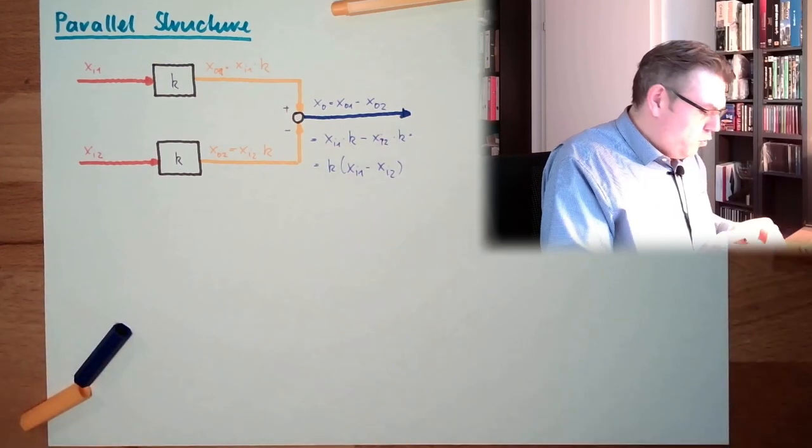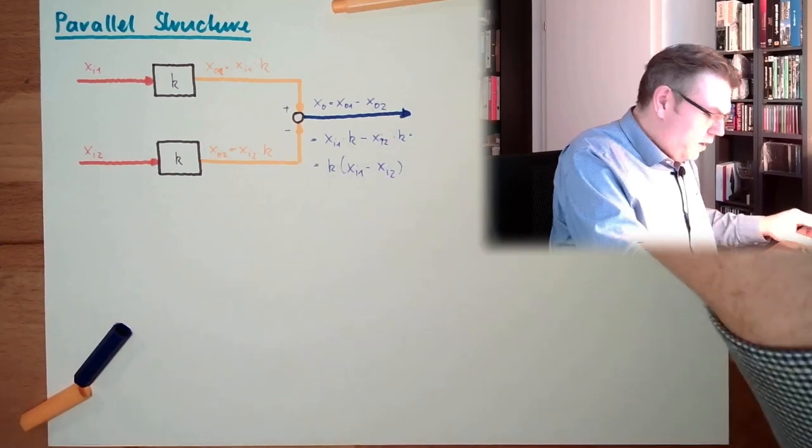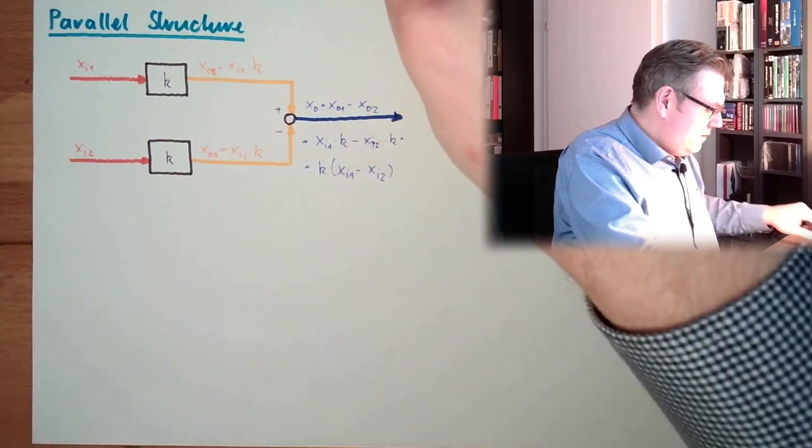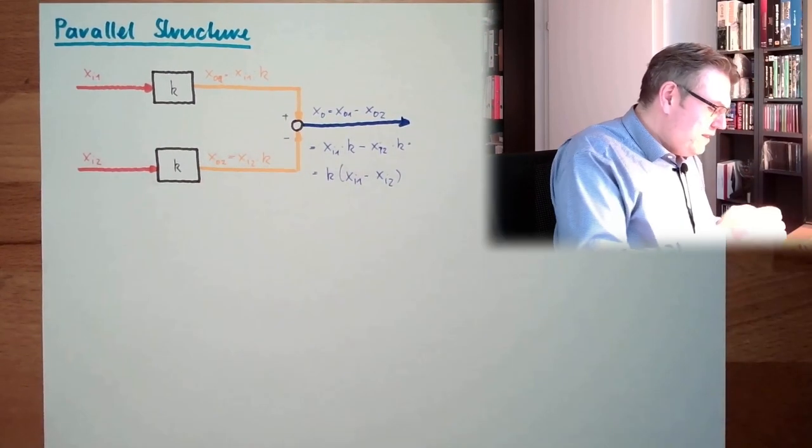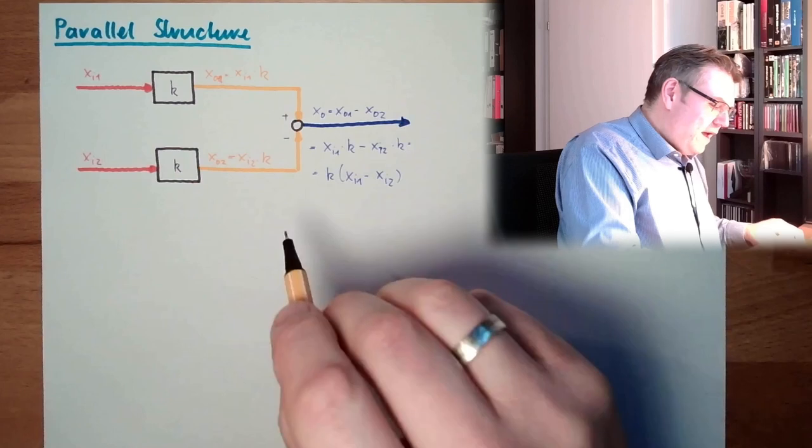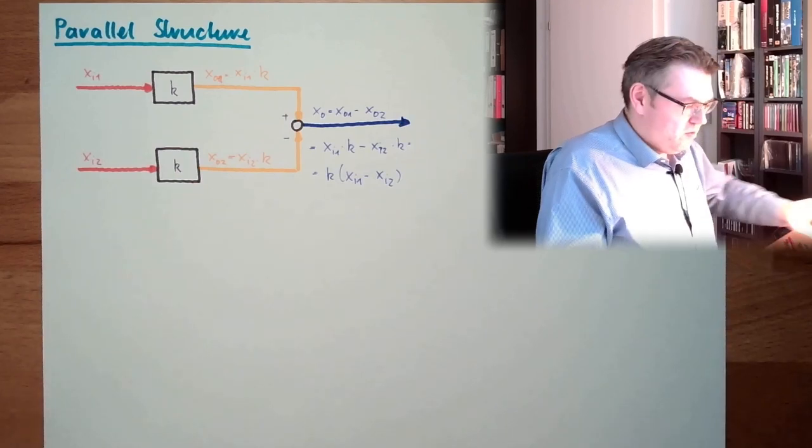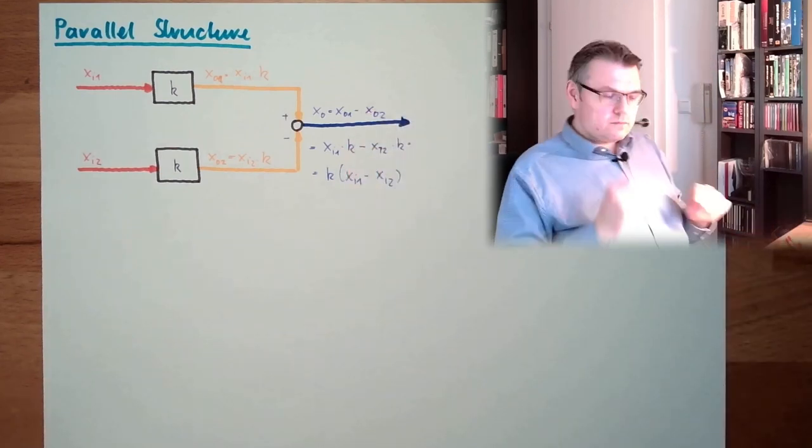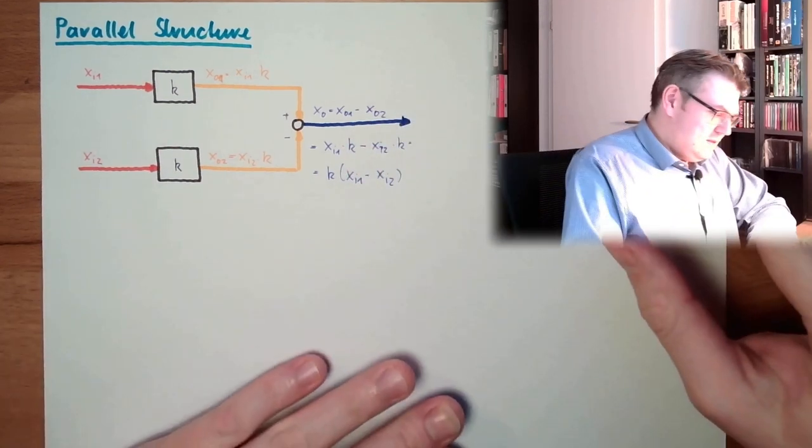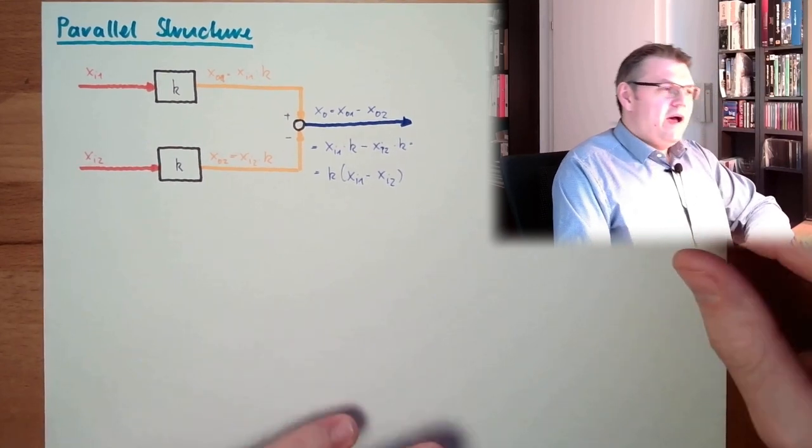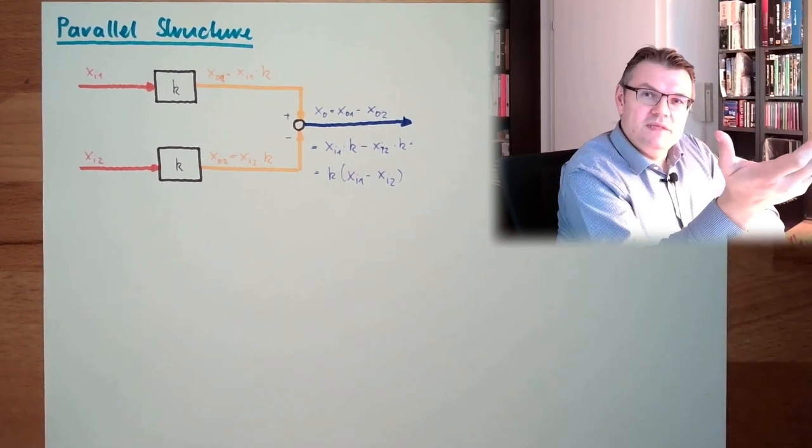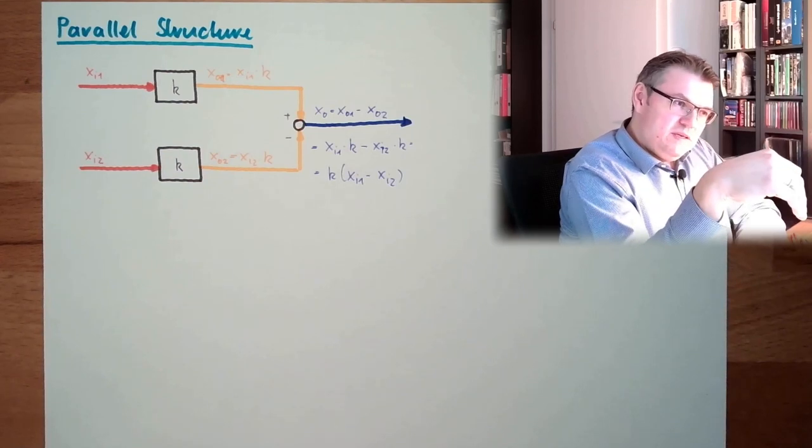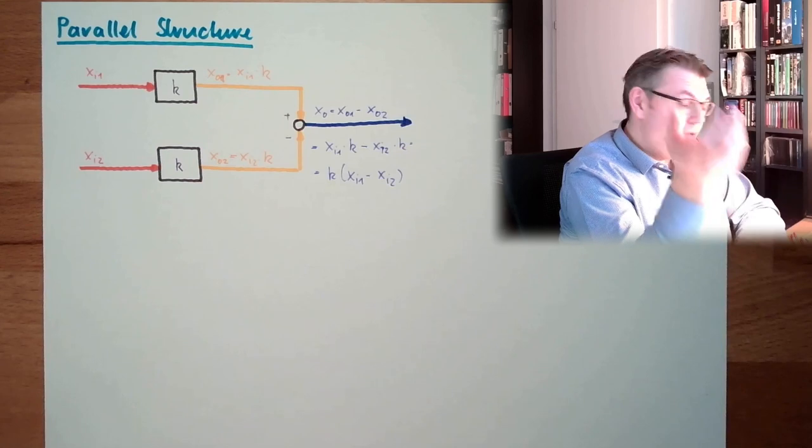Now, what good is this? That we have here two different inputs, and I only see the difference of the input at the output, raised by the gain factor k. One possibility is that often I have one disturbance signal, and I'm measuring a measurement signal and the disturbance signal.